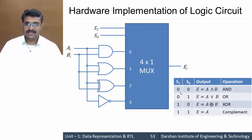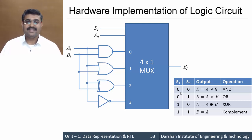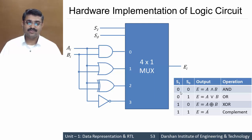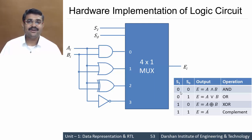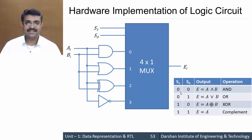The output is determined by the select lines. If S1=0, S0=0, we get AND output. If S1=0, S0=1, we get OR output. If S1=1, S0=0, we get XOR output. If S1=1, S0=1, we get A complement. This logic circuit represents one stage; if you have n bits, you require n such stages.